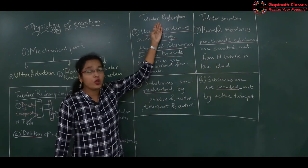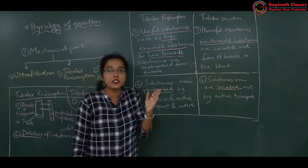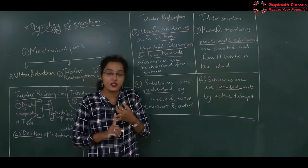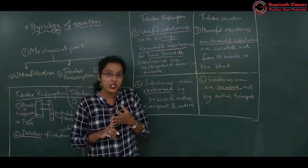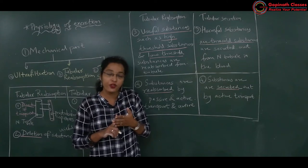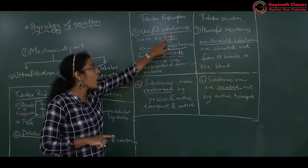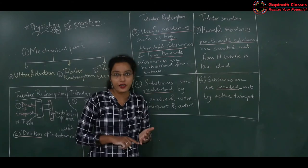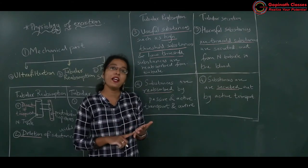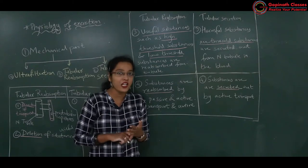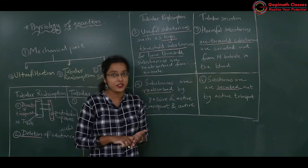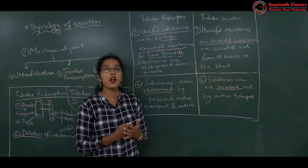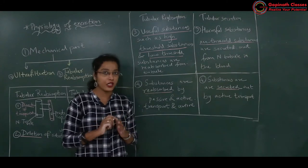In tubular reabsorption, the substances are classified as high threshold substances and low threshold substances. High threshold substances are glucose, amino acids, vitamin C, hormones, and various ions such as Na+ and Cl−. These are always needed by the body in large amounts. Glucose is an energy source; amino acids are building blocks of proteins. So why lose these important substances? The body will try to retain these even if they are already present in sufficient amounts in the blood.